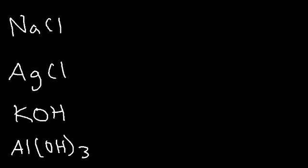Let's start with NaCl, sodium chloride. Na is a group 1 metal. Anytime you see a group 1 metal, it's always going to be soluble, so we're going to write aq. But AgCl — looking at the chloride part first — halides like chlorides, bromides, and iodides are generally soluble except with silver, lead, and mercury. Silver is an exception, so it's going to be insoluble. We're going to write s for solid.